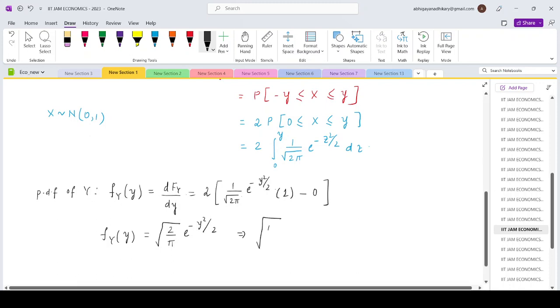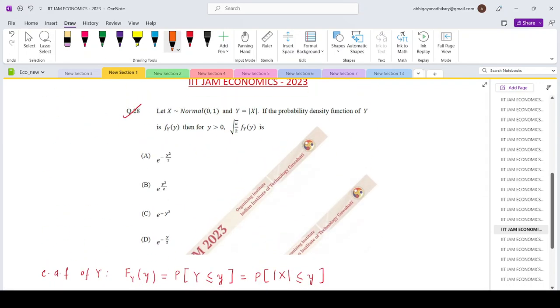So if you take the root over pi by 2 on the left, this expression turns out to be e to the power minus Y square by 2. If you look at the options that is matching with option number A. Thank you.